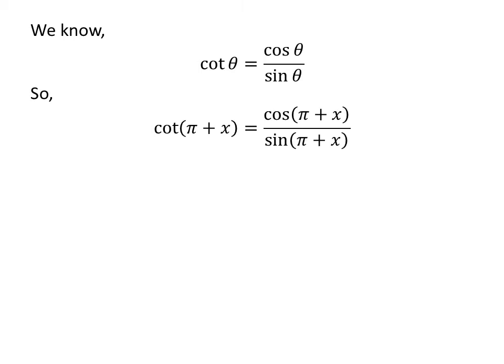So application of the above identity gives us cotangent of pi plus x is equal to cosine of pi plus x upon sine of pi plus x.